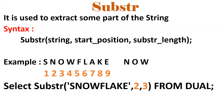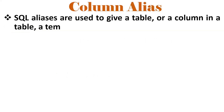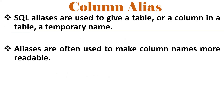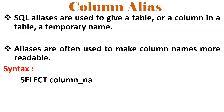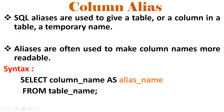Column aliases are used to give a table or column a temporary meaningful name. If I want to make output more readable, we should go for column alias. You can write SELECT column_name AS alias_name, or even without the AS keyword. This is used regularly in real-time for formatting output.